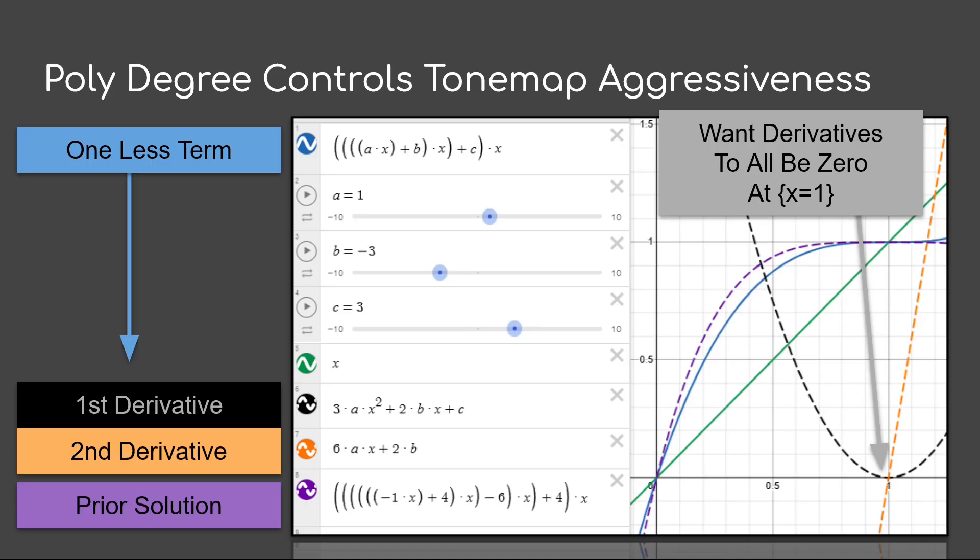Another thing, note that we want all the derivatives, we want them all to be 0 at x equals 1.